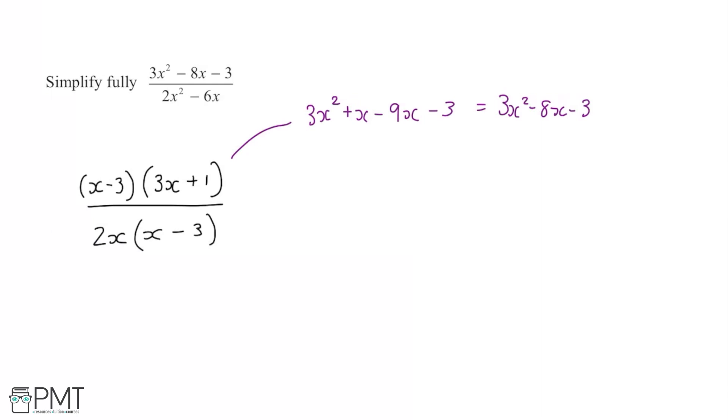So now moving on, I can see that I have an x minus 3, which I wanted to happen in both the numerator and the denominator. So I can simply cancel these out, divide the top and the bottom of the fraction by x minus 3, and that's going to leave me with a simplified fraction of 3x plus 1 over 2x.